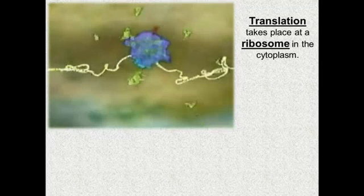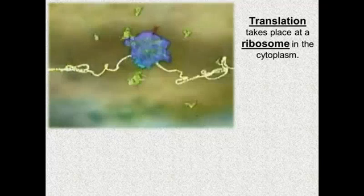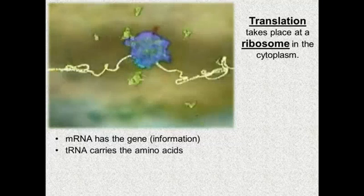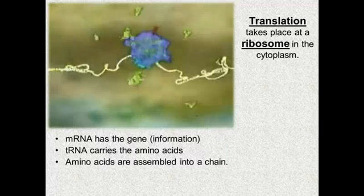So let's quickly review what we just saw: translation taking place at a ribosome in the cytoplasm. The ribosome reads through the messenger RNA — like reading a tape. The messenger RNA has the gene, which is the information. The transfer RNA carries the amino acids to match the anticodon on the transfer RNA with the codon on the messenger RNA. As it does that, the amino acids are assembled into a chain, which comes out of the ribosome. At the end, when it reaches the stop codon, the protein is set free and the whole process is complete.